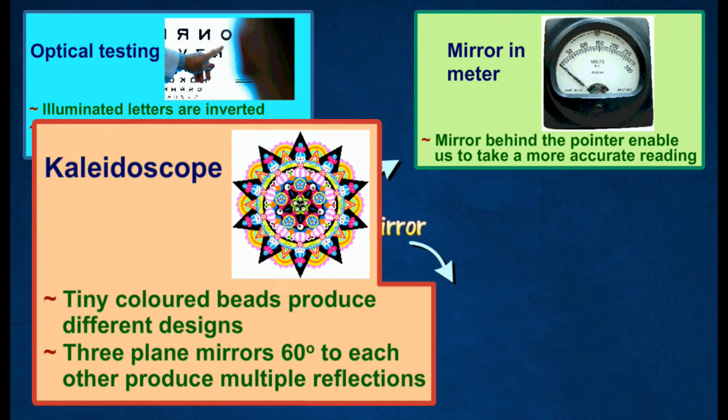Different designs are produced by tiny colored beads inside a kaleidoscope. It uses three plane mirrors which are at 60 degrees to each other to produce multiple reflections.